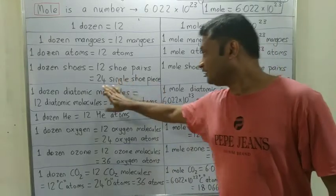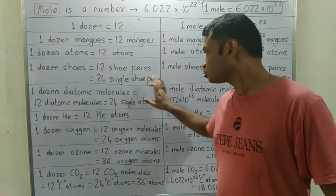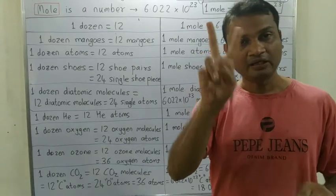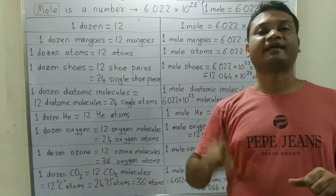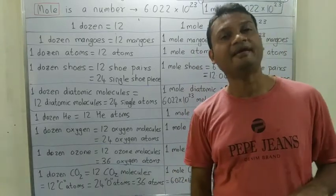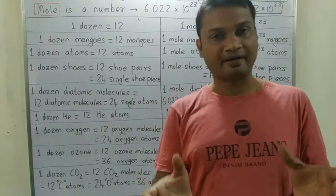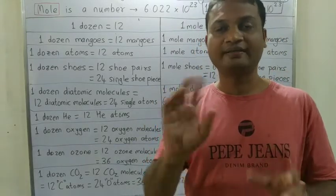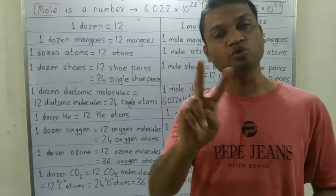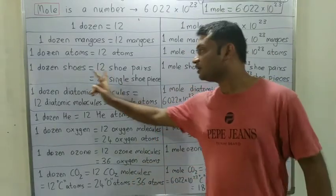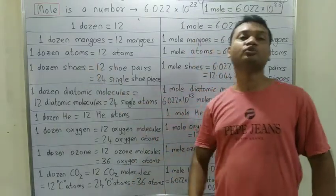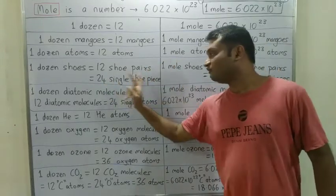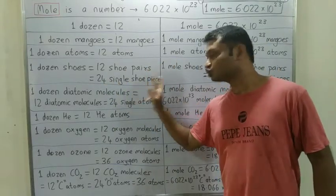So yahan pe kya likha dega? 24 single shoe pieces — ek-ek shoe piece. Ek pair mein do shoe piece hai. So one dozen shoes means 12 shoe pairs, which is 24 single shoe pieces.